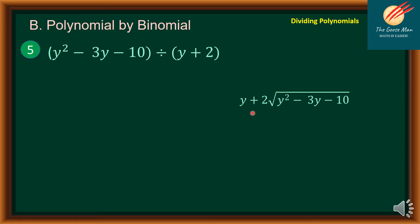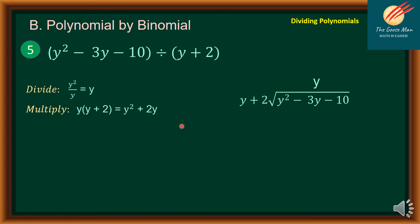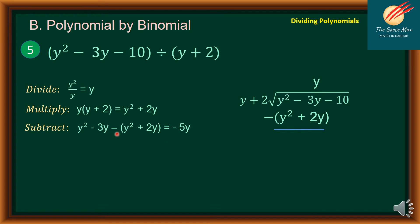The first step is to divide the first term of the dividend by the first term of the divisor, meaning y squared divided by y is equal to y. I'll put it above negative 3y because they have the same exponent. The next step is multiply: y times the divisor y plus 2 results to y squared plus 2y. Then I'll subtract. y squared minus y squared is 0. Negative 3y minus 2y results to negative 5y.